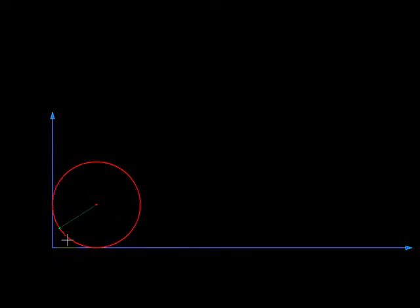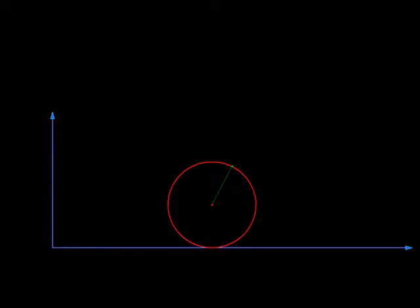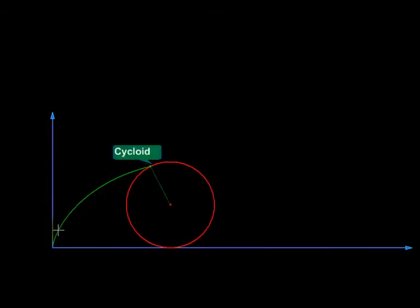So suppose we have been given a circle like this and it is kept on the ground like this. So let that be our x-axis and if we set it rolling without slip, any point on it traces a cycloid. So here is a cycloid being traced by such a circle.